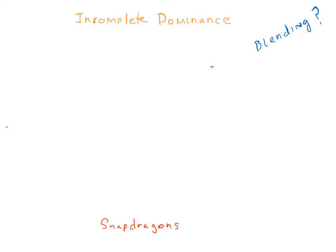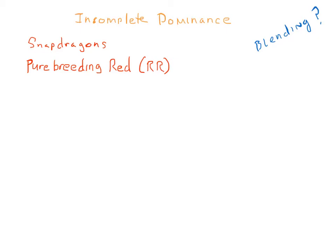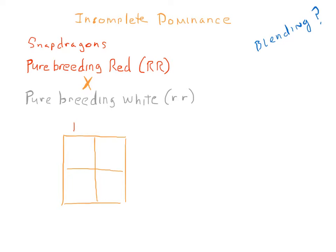For this case we'll use a type of flower called a snapdragon. We will cross a pure-breeding red snapdragon with a pure-breeding white snapdragon. Let's set up a Punnett square, putting the gametes of the red snapdragon across the top of the chart and the gametes of the white snapdragon across the side.